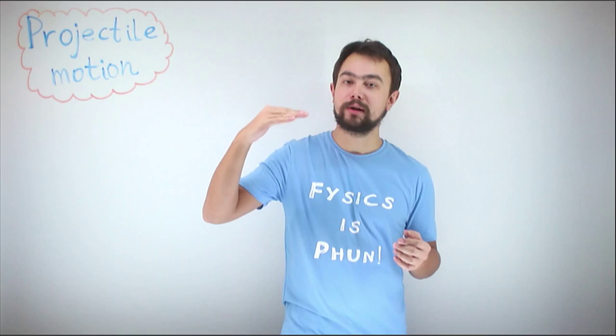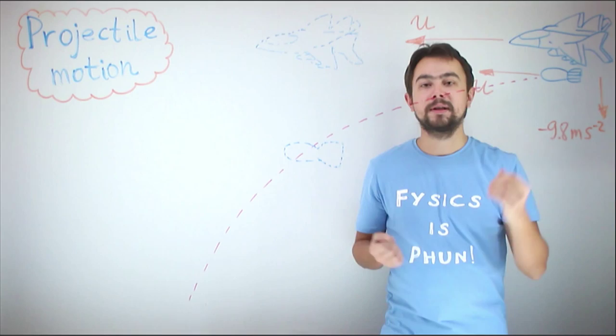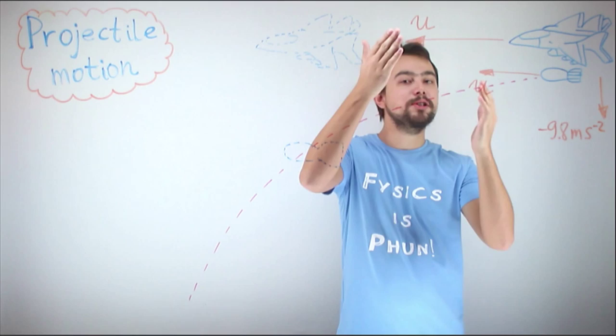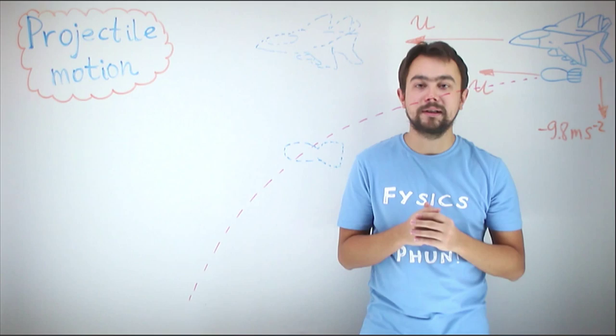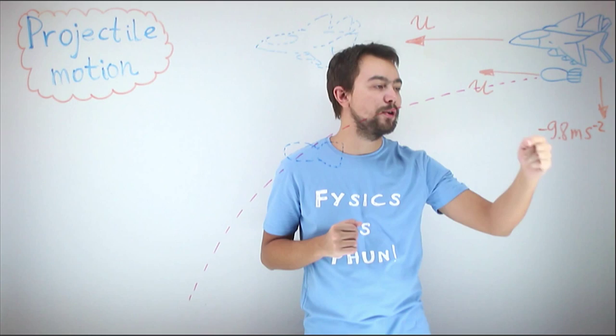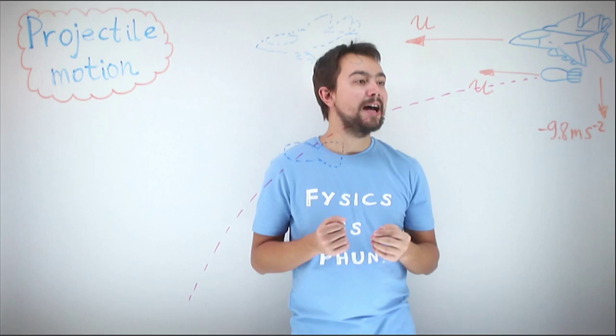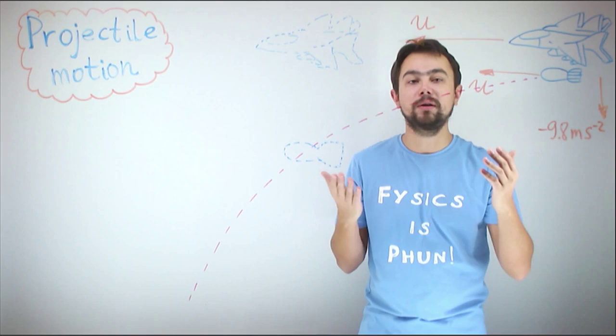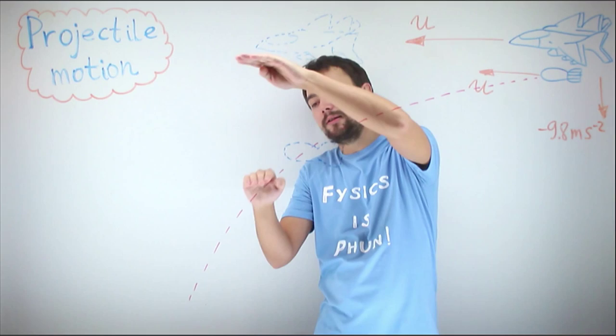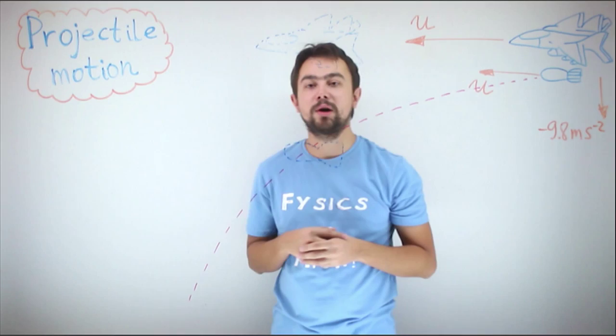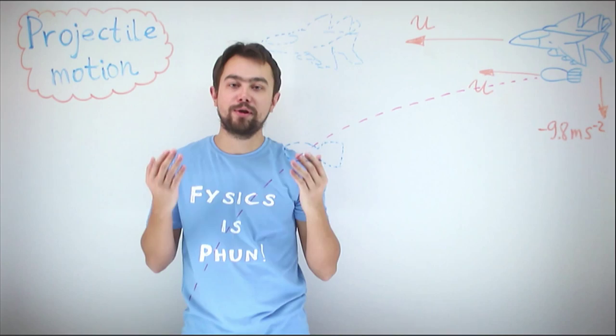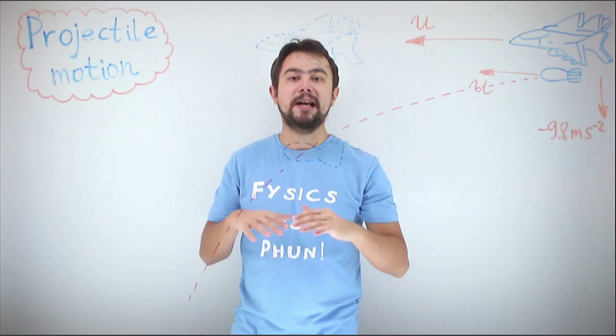An airplane flying horizontally releases a bomb. If we do not account for air resistance, horizontally the bomb continues moving at a constant velocity equal to the velocity of the airplane. Vertically, the bomb accelerates as a free-falling object with acceleration of minus 9.8 meters per second squared. Since the horizontal velocities of the airplane and the bomb are equal, the bomb will always be under the airplane at any moment in time. This was a real issue in World War 1 when airplanes flew at altitudes of 20 to 30 meters, and the bomb exploded just under the airplane, sometimes destroying it.